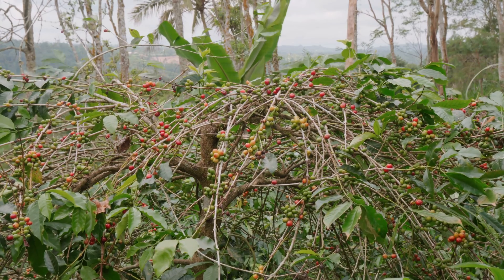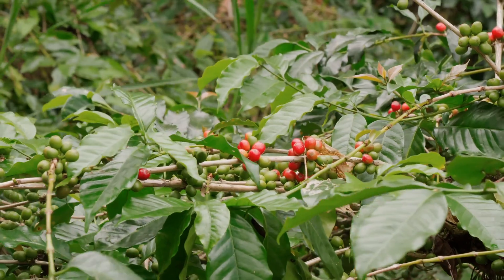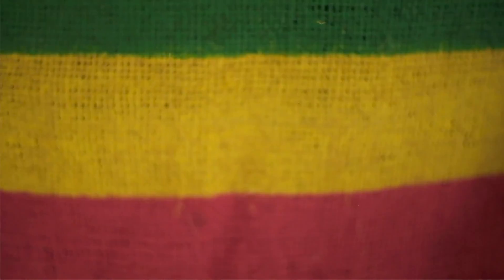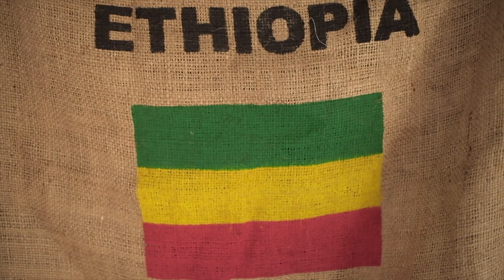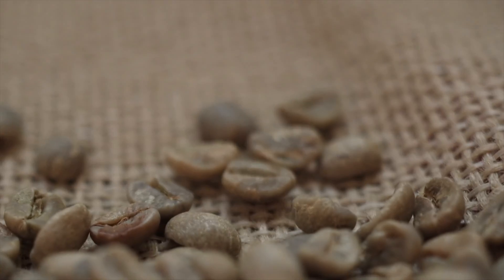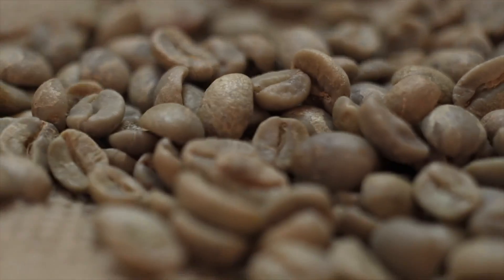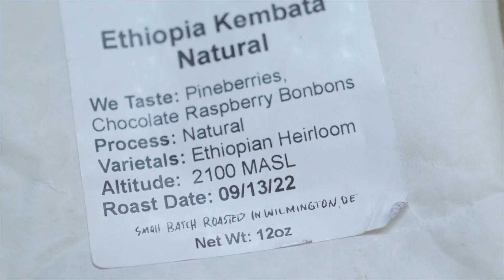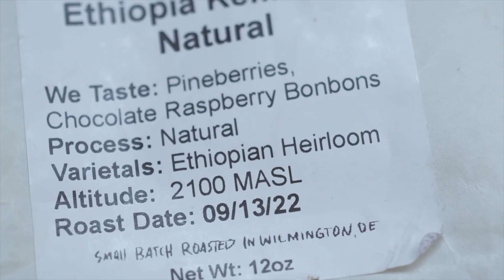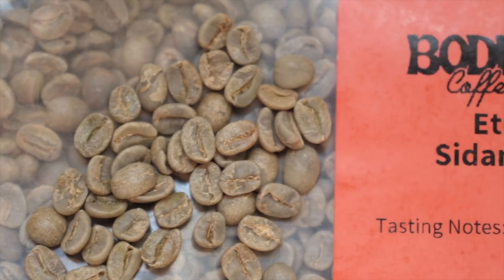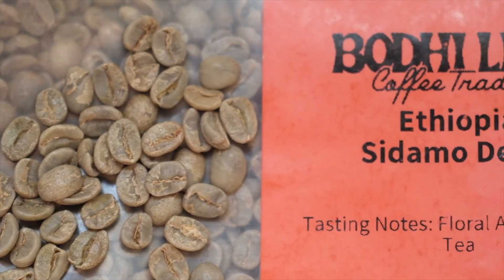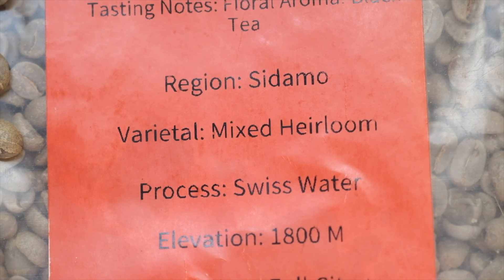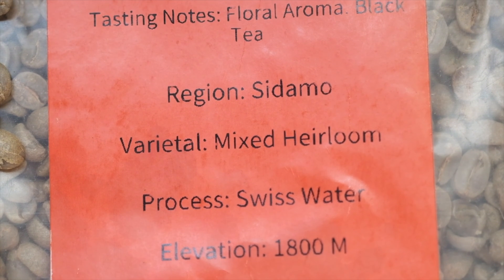Some coffees are considered an heirloom variety if they have persisted for some time in a specific location. Ethiopia, the suspected birthplace of coffee, has many such heirloom varieties that are native to the country. Most of these grow wild, but some end up being cultivated at farms. The term heirloom does not refer to one specific variety, but includes at least 10,000 different types of coffee trees, so the term is somewhat of an ambiguous descriptor.